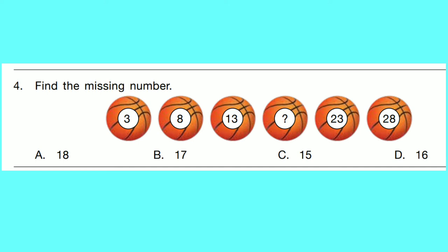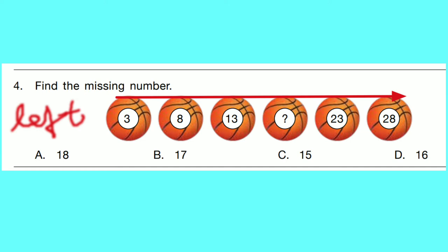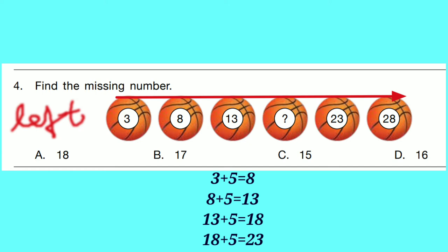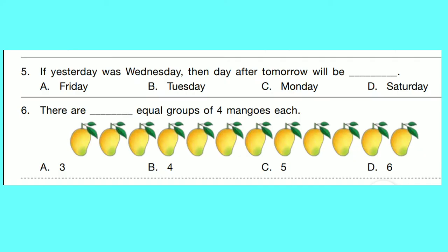Question number 4: Find the missing number. Numbers are 3, 8, 13, dash, 23, 28. Looking towards the numbers from left to right, each number is increased by 5. So 3 plus 5 is 8, 8 plus 5 is 13, 13 plus 5 is 18. Correct option is A: 18.